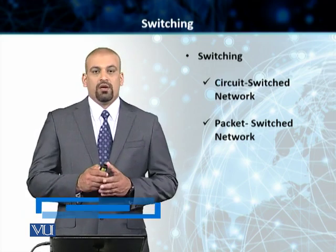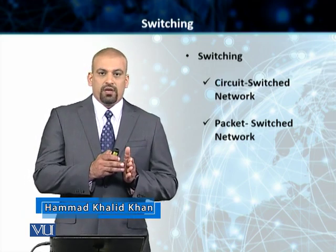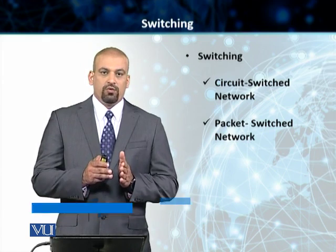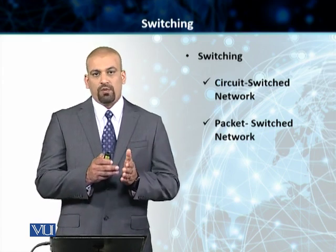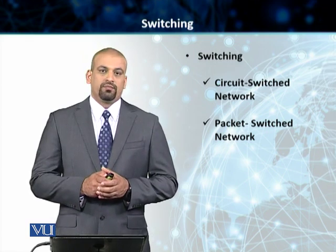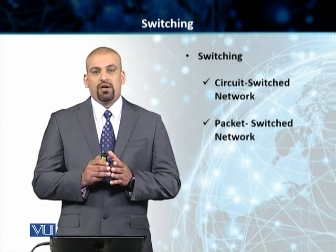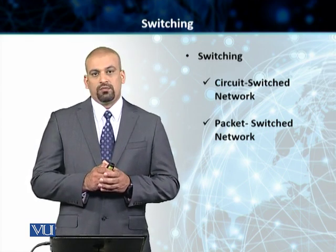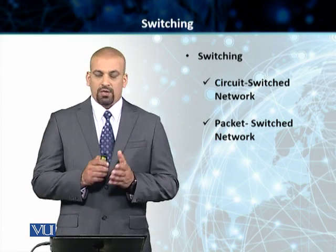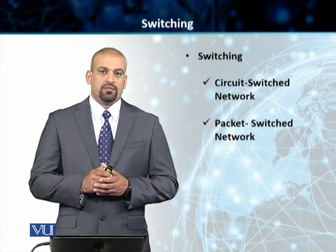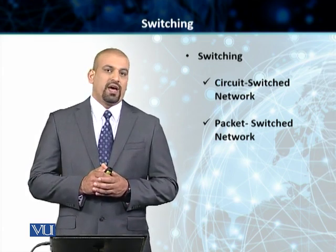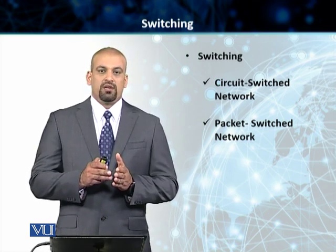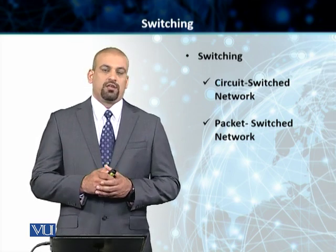What do I mean by that? Traffic — you always need to have a switch that forwards the traffic from one part of that network to the other part. When we talk about switching, there are two basic types of switching used in today's network. One is more common than the other, but both are prevalent. The first type is called circuit switching networks, and the second type used in data communication systems is called packet switching networks.